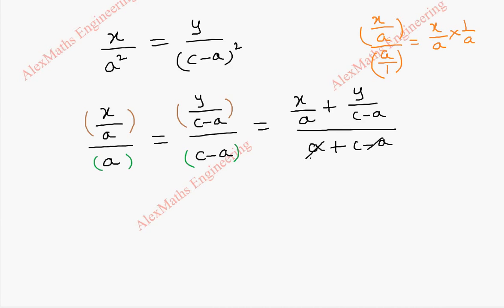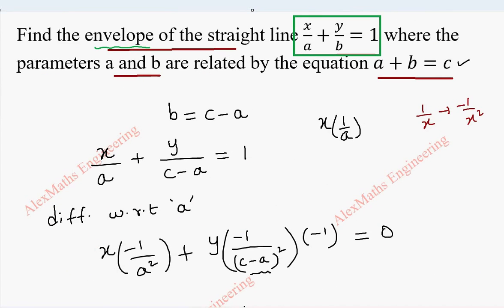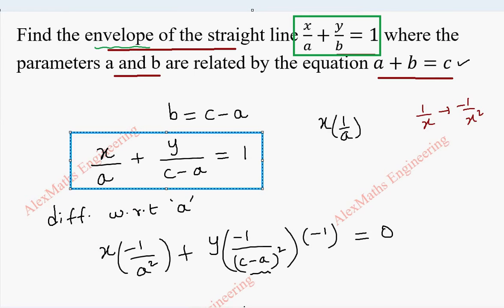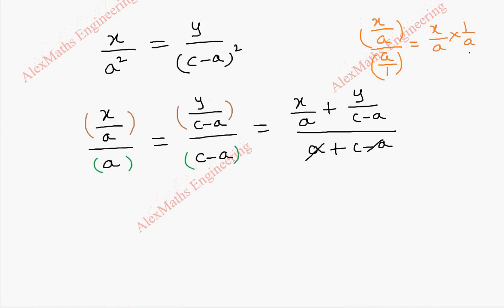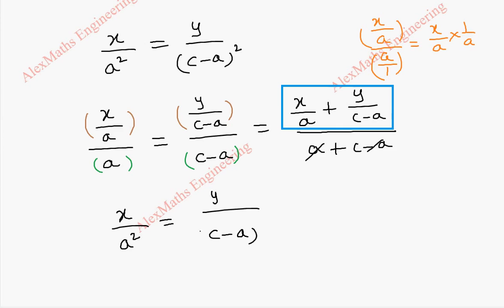The a's get cancelled in the denominator, giving us c. From the original equation we already know x/a + y/b = 1, so we replace x/a + y/(c-a) with 1. So this part becomes 1 and the denominator becomes c. We rewrite back as x/a² = y/(c-a)² = 1/c.